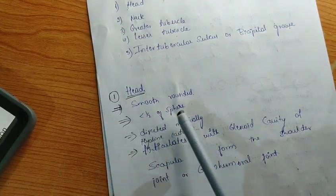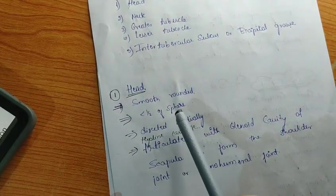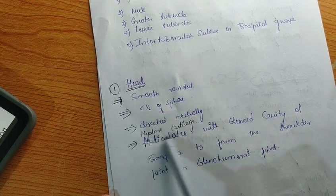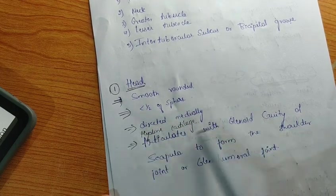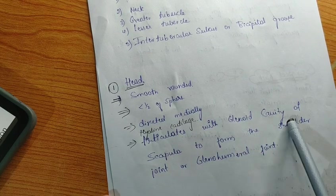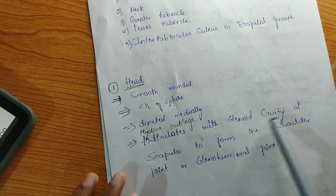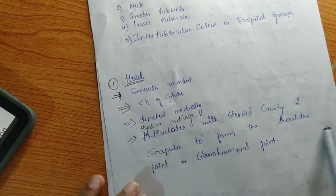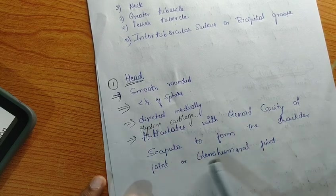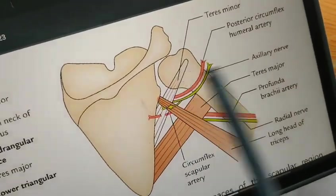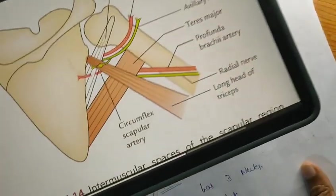In summary: the head is smooth and rounded, forms less than half of the sphere, is directed medially, is covered by hyaline cartilage, and articulates with the glenoid cavity to form the shoulder joint, also known as the glenohumeral joint. Now, regarding the neck, there are three types of necks in the humerus.